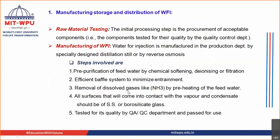Let us go to the first step — that is manufacturing, storage, and distribution of water for injection. Before we carry out any step, this is true for tablets, capsules, or any formulation: before manufacturing, the first thing you do in your factory premises is material testing. Whatever raw material has been received, whether it is of good quality or not, should be determined by your quality control department.